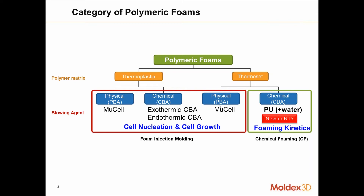For thermosets, we can also use a physical PBA, which would be grouped under the MuCell or foam injection molding module. It's not until we start to use a CBA with thermosets — and really the only one characterized under this category is polyurethane and water — that we get into what the chemical foaming module includes in R15. So in R15, the chemical foaming module is actually brand new.